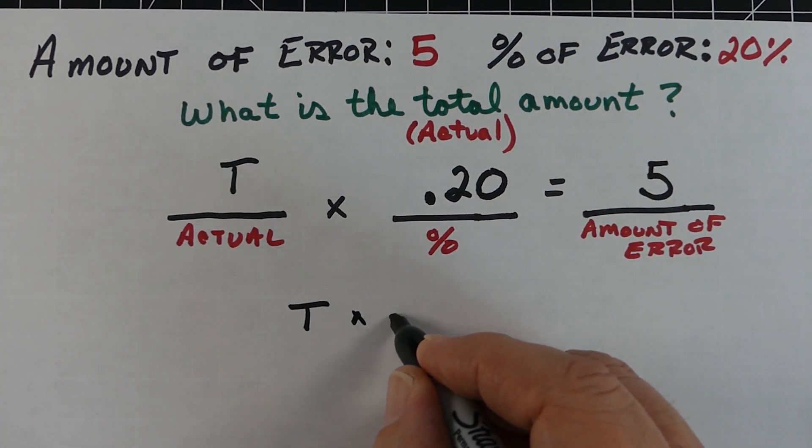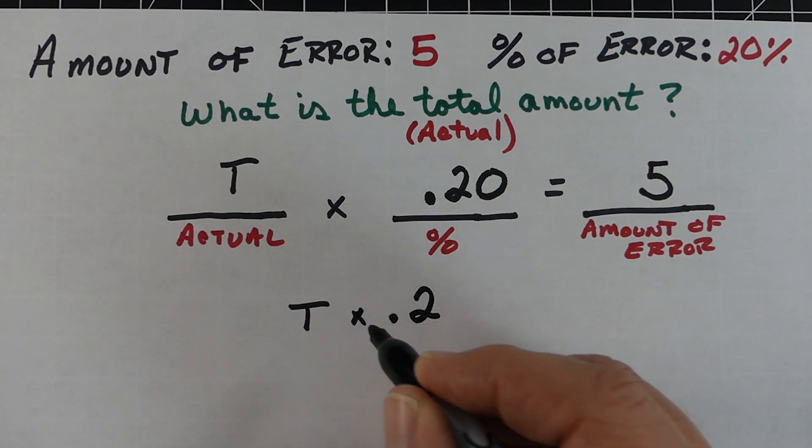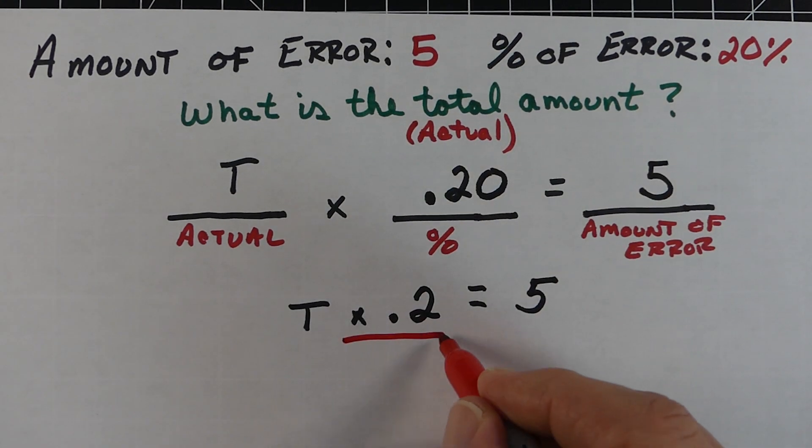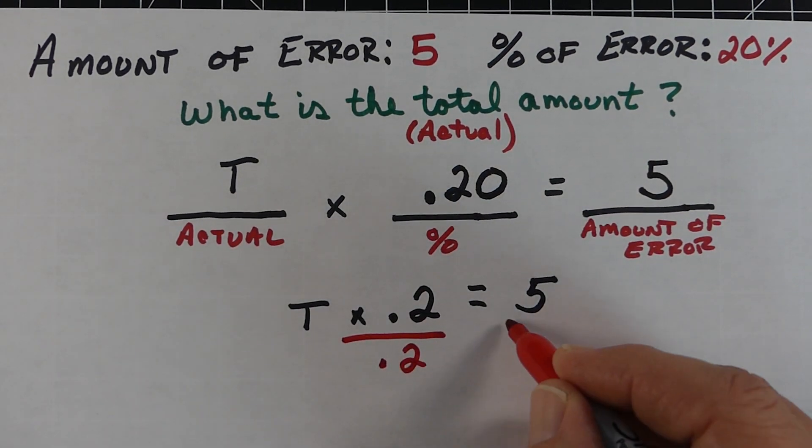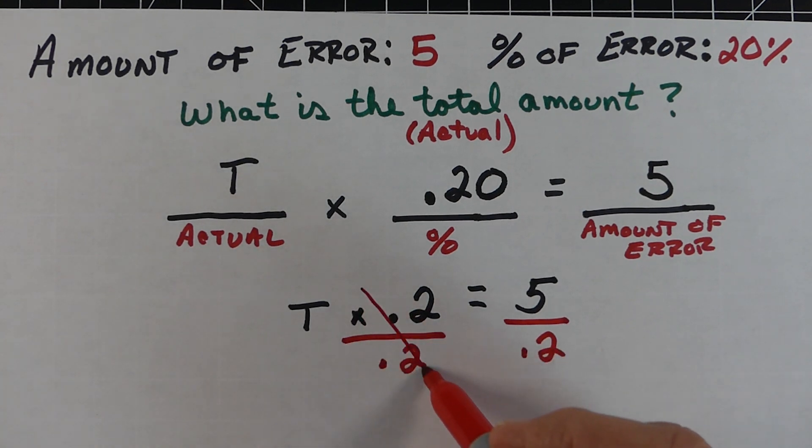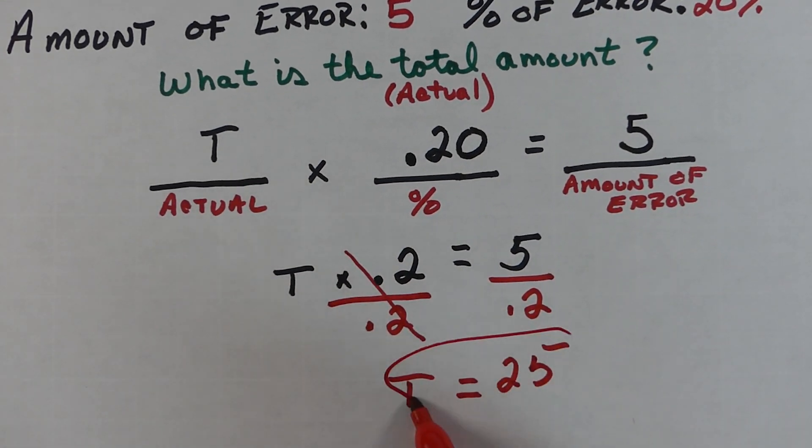To calculate this kind of problem, it's also a one-step equation. We put T for our variable. Our problem is T times 0.2 equals 5. We want the variable T by itself, so we divide by 0.2 on both sides. Left side is T, and on the right, 5 divided by 0.2 is 25. So 25 was actually the total amount.